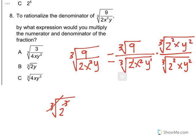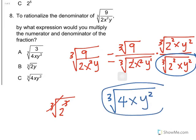So it looks like the expression that we need to multiply is the bottom here which gives us the cube root of 2 squared which is 4 and then xy to the 2nd power. And that looks like it is answer choice C.